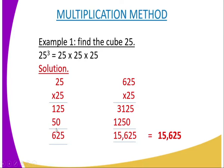You take 25, you multiply by 25, and the answer becomes 625. And the next step, you take the 625, then you further multiply by 25, then the answer becomes 15,625. And therefore, that becomes 15,625 as the answer of 25 to power 3, or the cube of 25.